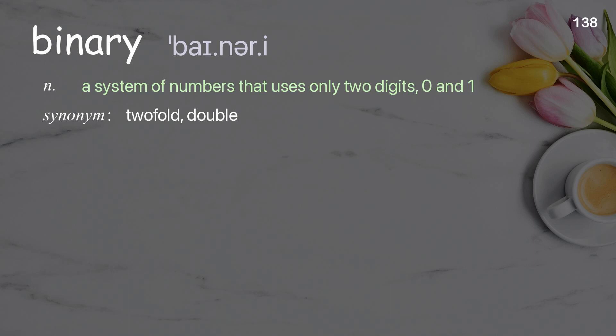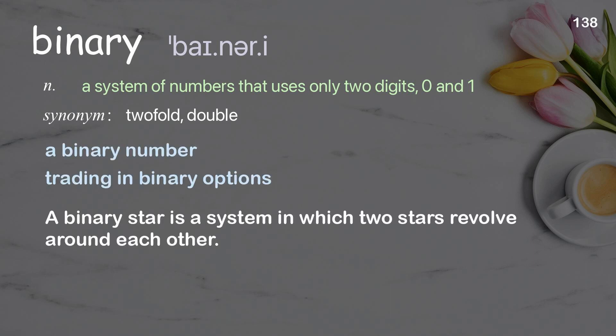Binary: a system of numbers that uses only two digits, zero and one. Examples: a binary number, trading in binary options. A binary star is a system in which two stars revolve around each other.